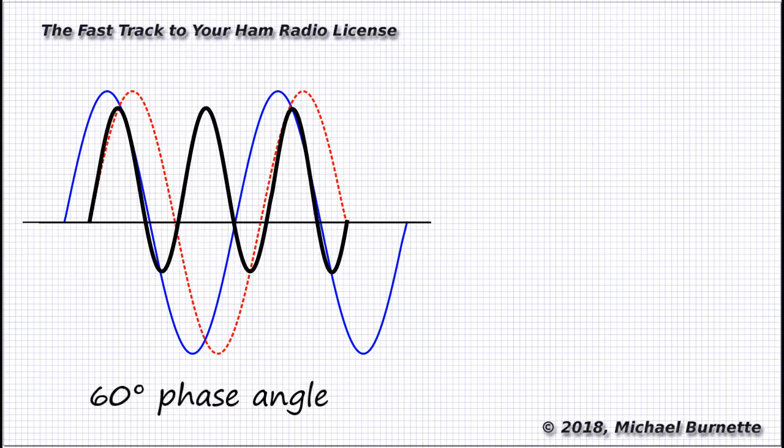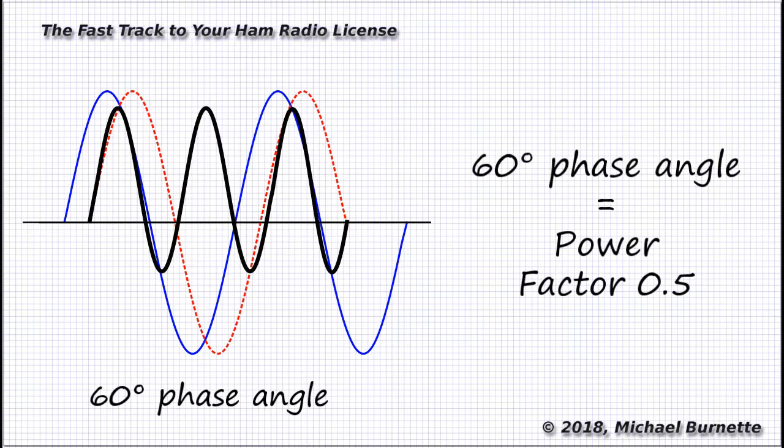Now notice in this graph, there are many more points where the voltage and current are cooperating and making real power. So the average is higher than at 90 degrees, we're on the positive side of things, but still less real power than at zero degrees.